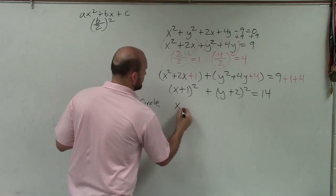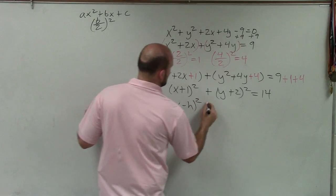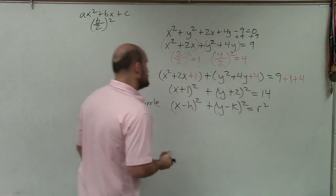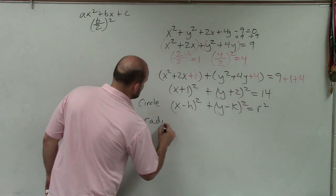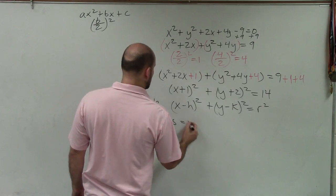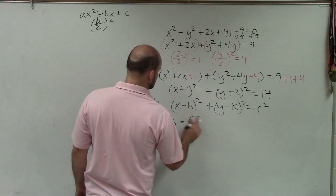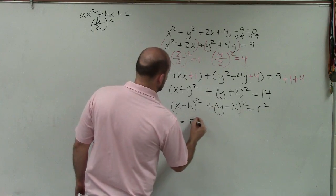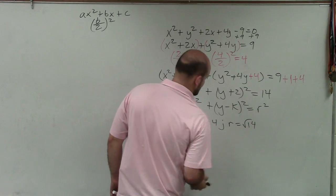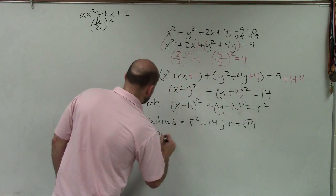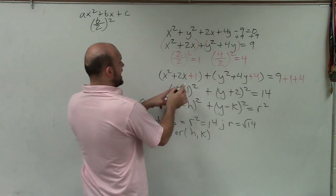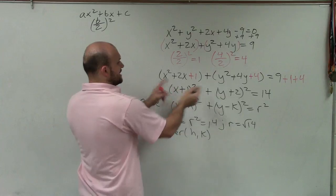And remember, a circle is in the form of (x - h)² + (y - k)² = r². So therefore, I can determine that the radius is equal to - r² equals 14. Therefore, r equals the square root of 14. And my center, which is in the form of (h, k), is of course going to be opposite of h, opposite of k. So it's (-1, -2).